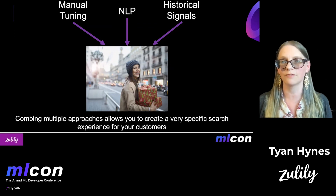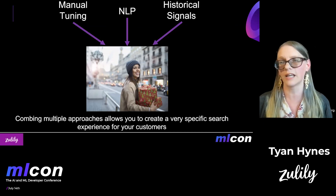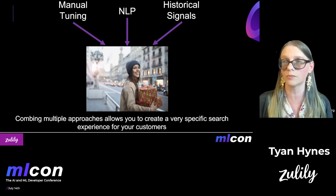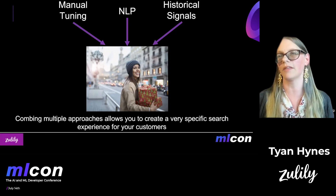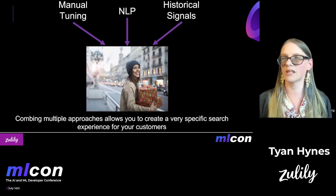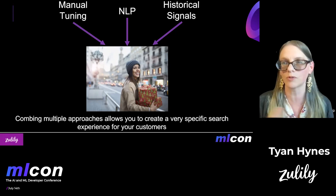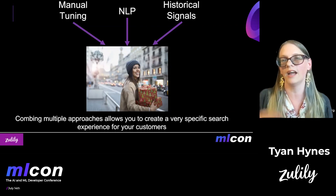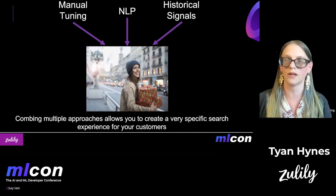This is not a one-size-fits-all, nor a single solution you have to choose — you really have to think about all the different ways to put these approaches together. You can also slice it by customer segment: for very loyal customers who are consistent in what they want, you might use historical signals more. For new customers, an NLP approach might work better since you don't yet know what they want. And for customers coming in from a particular platform like TikTok who behave in a very certain way, you might manually tune queries to respond to that. There are many ways to mix and match these approaches to create the best search experience for your particular use case.